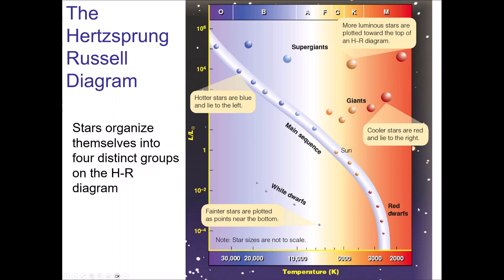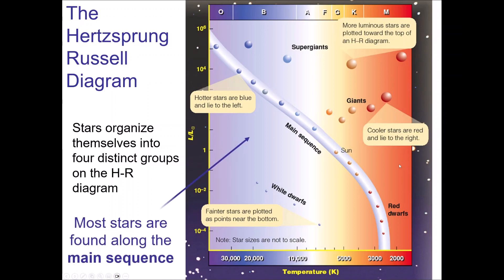When you put stars on the HR diagram — meaning you know their temperatures and luminosities — we find that the vast majority of stars, over 90%, lie on a very narrow strip that goes from the upper left to the bottom right. We call this the main sequence. The sun is here on the main sequence. This is a location where a star is in hydrostatic equilibrium, doing fusion in its core — kind of in the middle of its life. Middle-aged stars, basically.